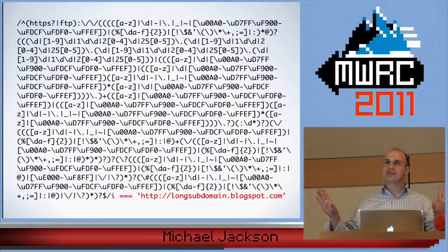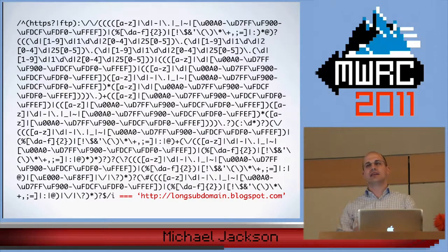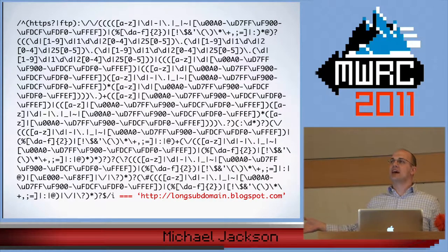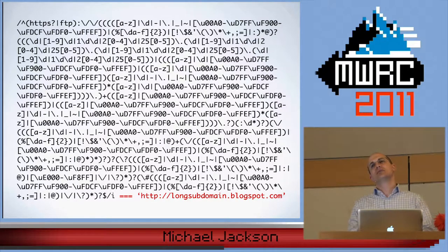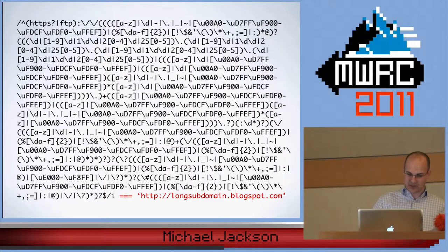Beware if you're using something like this, because most of the time the tendency is to go out and say: I need to validate a URL, I need to validate an email address — solve the problem. People on the internet have done that before, Google will help me out. Validate URL Ruby — there it is. Copy, paste, into my app. Go out to lunch, right? You're done for the day.